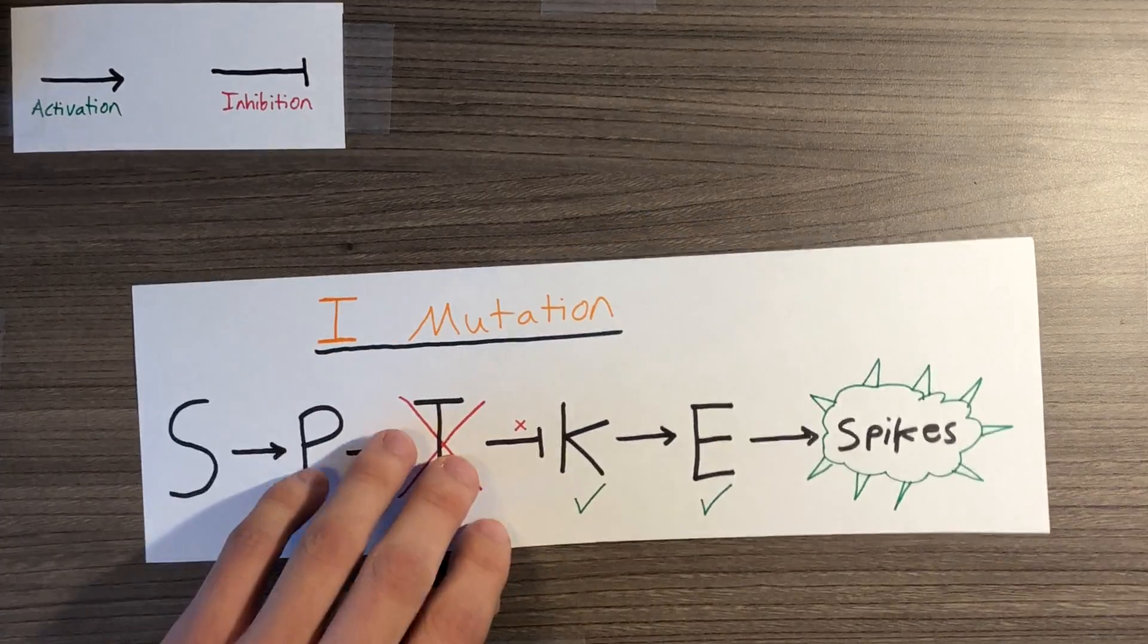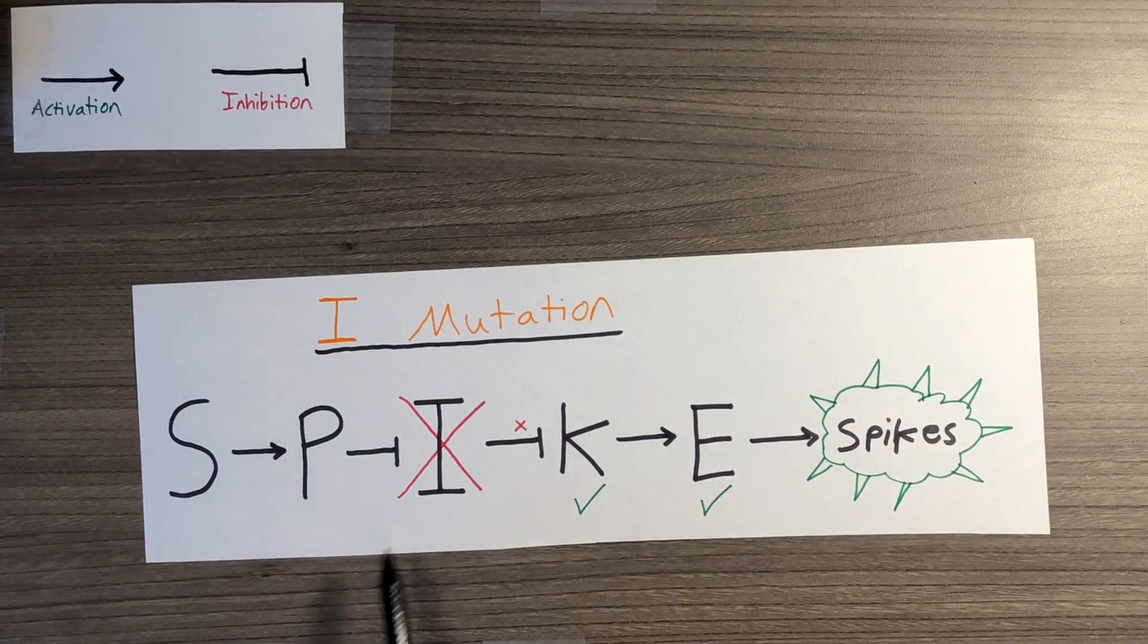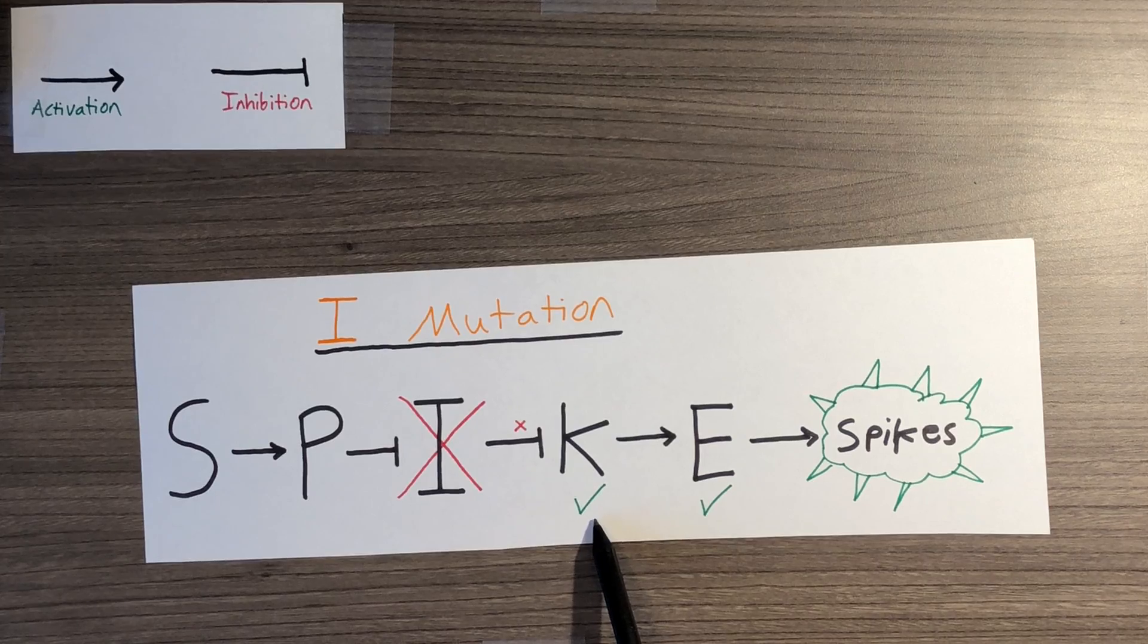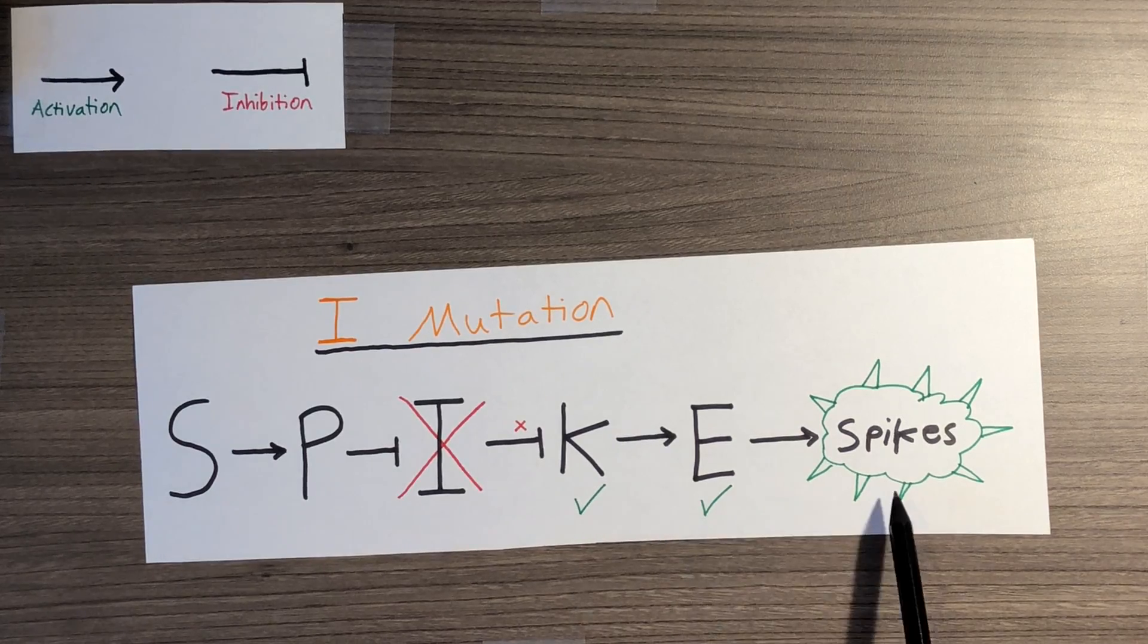This next mutant cell does not produce I, and anything before that doesn't matter. The K gene will not be inhibited and will be functional, allowing the E gene to be stimulated, producing skin cells with spikes.